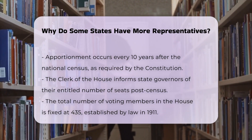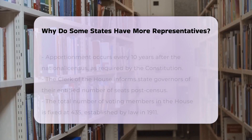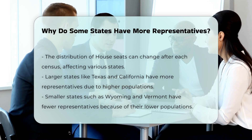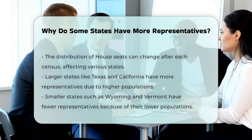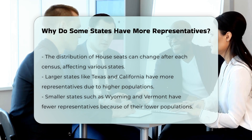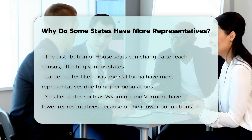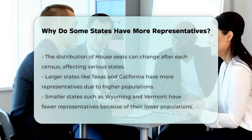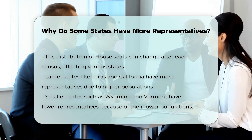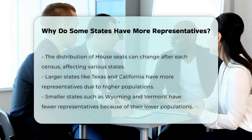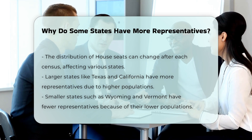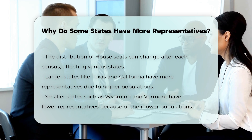The total number of voting members in the House of Representatives is fixed at 435, a number set by law in 1911. This number has remained constant, although the distribution of these seats among the states can change after each census. For example, after the 2020 census, some states gained seats while others lost them. States with larger populations, such as Texas and California, have more representatives, while states with smaller populations, like Wyoming and Vermont, have fewer representatives.